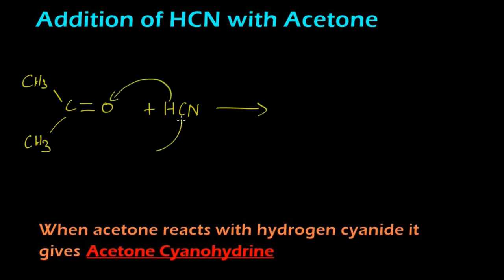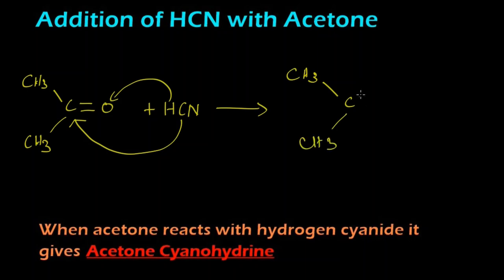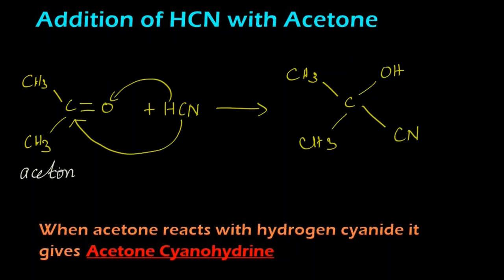What happens is this hydrogen will get attached to this oxygen, and the CN will get attached to this carbon. So we get CH3, C, CH3, with an OH group and a CN group attached to the central carbon. This is acetone cyanohydrin.